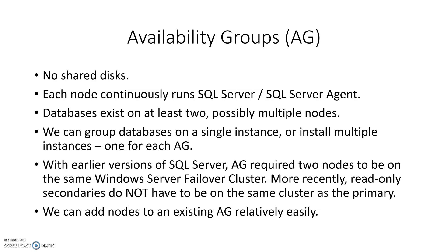Does availability group work better than clustering in terms of performance? Potentially. You have the option of distributing or scaling out your read-only queries. When you set up secondary instances, they are always read-only — you cannot modify data on the secondary instances. You have the option of configuring read-only routing, which means you can round-robin your query requests that are read-only. They can go to the primary node or any of the secondary nodes, and you can specify exactly how those read-only requests are to be routed.